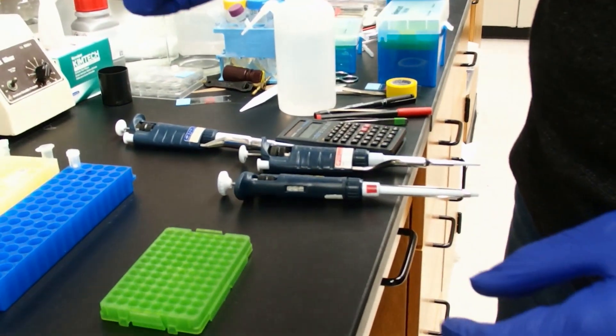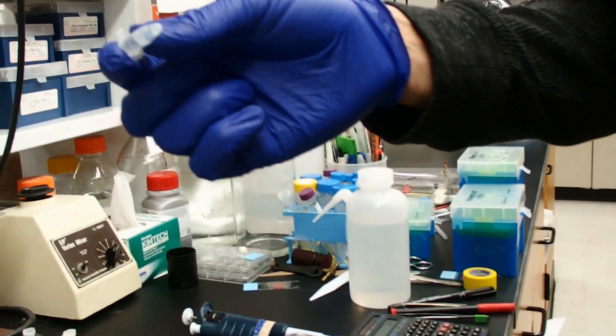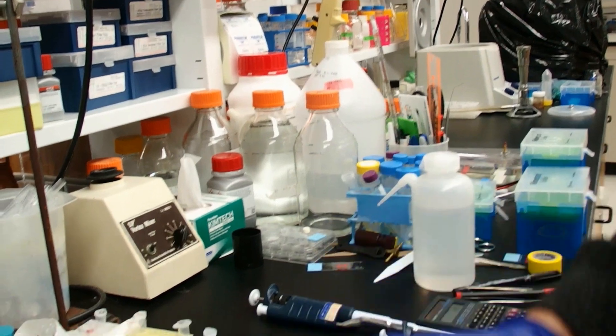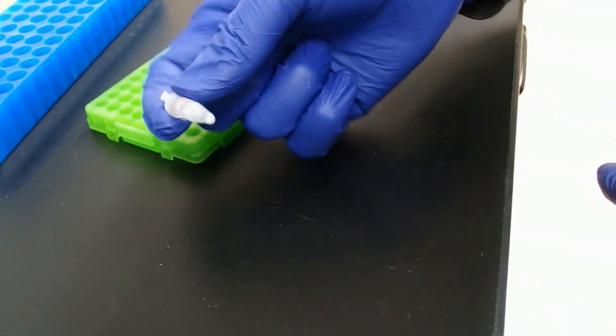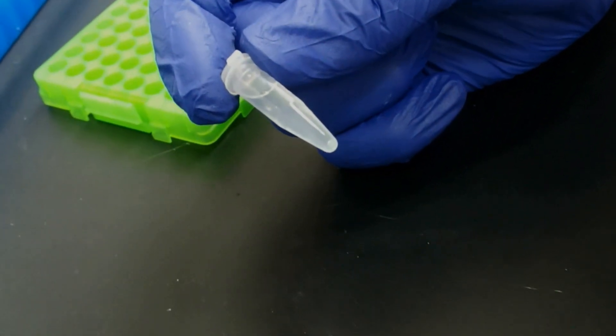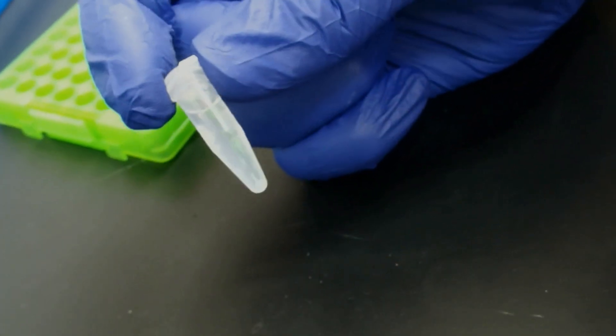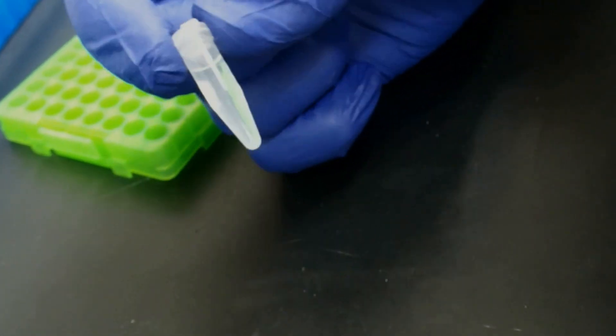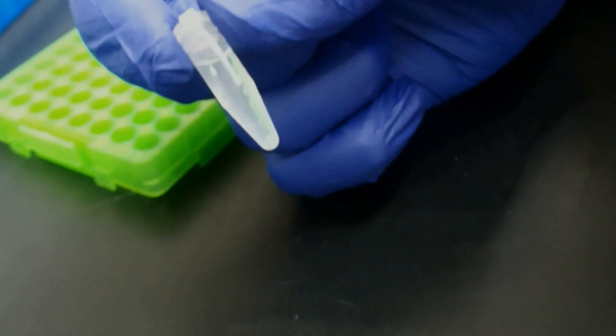Close that up and I'm going to gently invert this a few times. Now you'll be able to see the pellet very clearly. So we can go against the bench now and invert it a few more times. The pellet starts to turn white once we have ethanol in there. Yeah, I see it. So it's very easy to see.